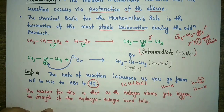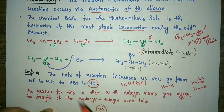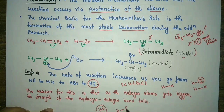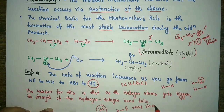We generally don't take HF in Markovnikov's rule as its bond strength is very strong. So generally we take HCl, HBr, and HI in Markovnikov's rule.